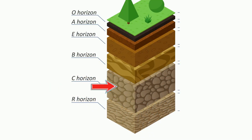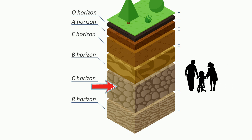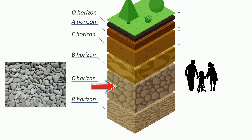C horizon is the parent material. This layer contains much of the material that the soil was originally made from. It will contain rock fragments. Weathering breaks down the parent rock into smaller and smaller pieces of rock, and this layer is most often light in color.